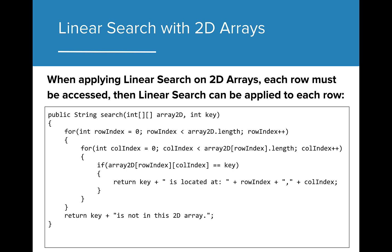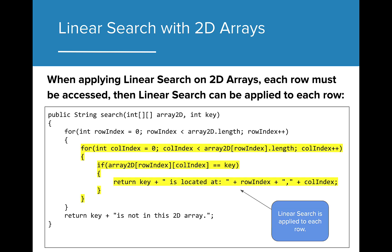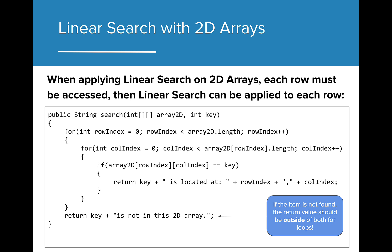Just as arrays use linear search to find elements, 2D arrays can also use linear search to find values. Here is the general algorithm for searching a 2D array. In the case of 2D arrays, each row needs to be searched individually. The outer loop simply accesses each individual row of the 2D array, while the inner loop applies the search to the array. If the item is not found in any of the arrays, then the return value indicating that the key cannot be found should be placed outside of both loops. This ensures that this only returns if none of the arrays in the 2D array contain that particular value.